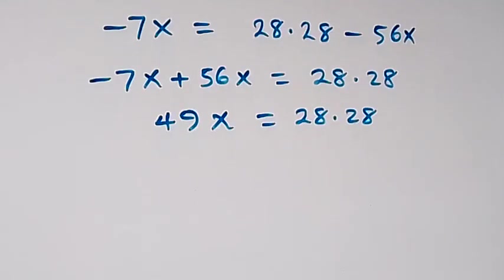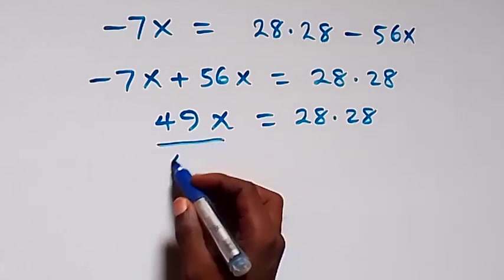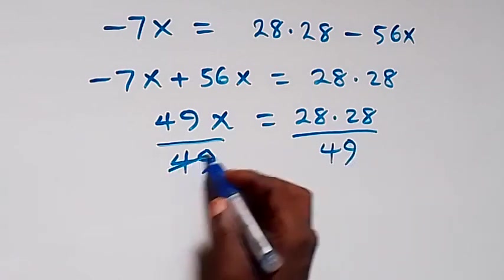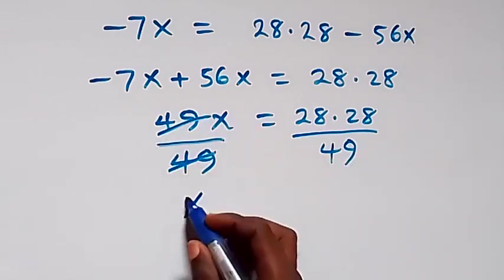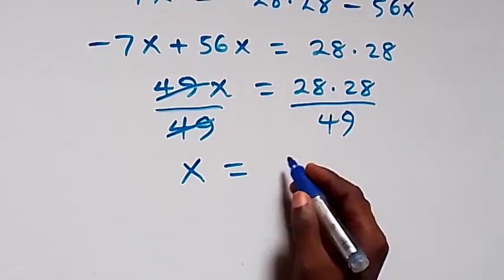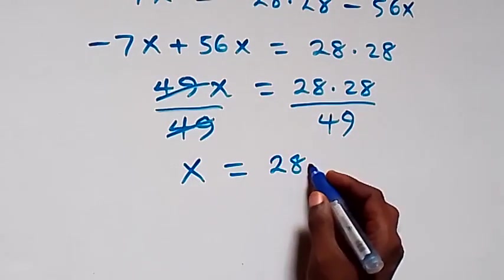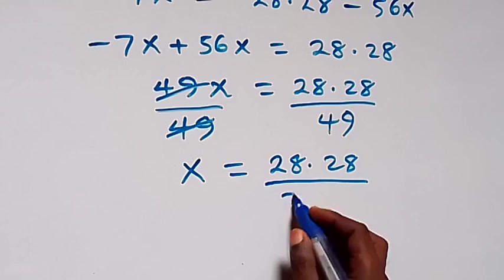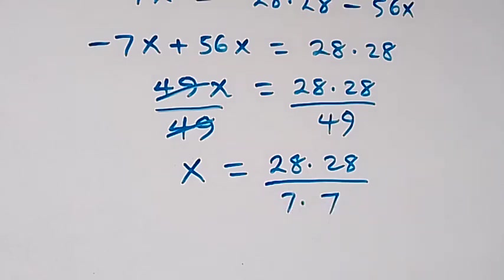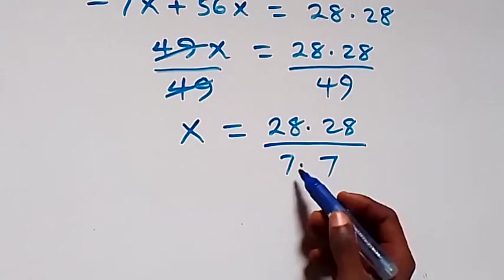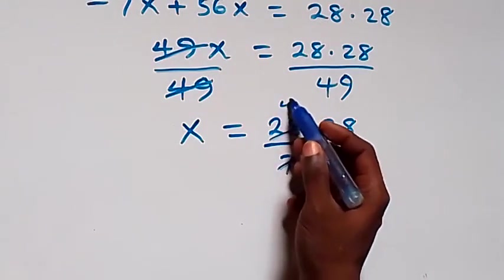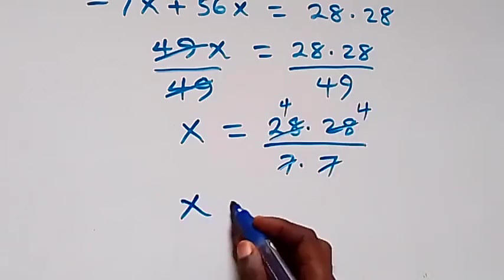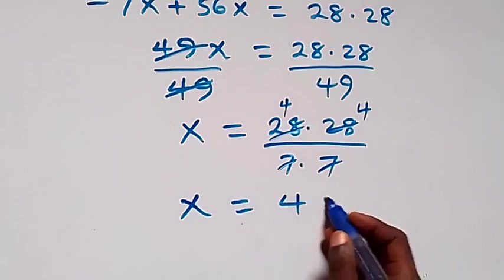Dividing both sides by 49 to solve for x, we write 28 times 28 divided by 49. Writing 49 as 7 times 7, and 28 as 4 times 7, we see 7 cancels with 7 to give 4, and again 7 cancels to give 4, so x equals 4 times 4.